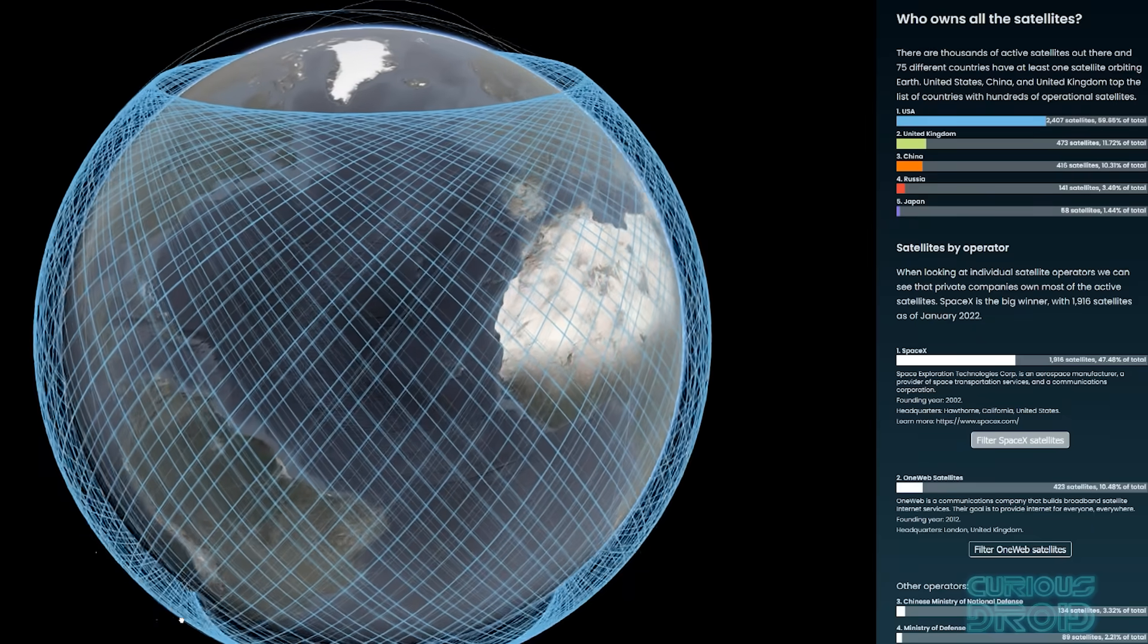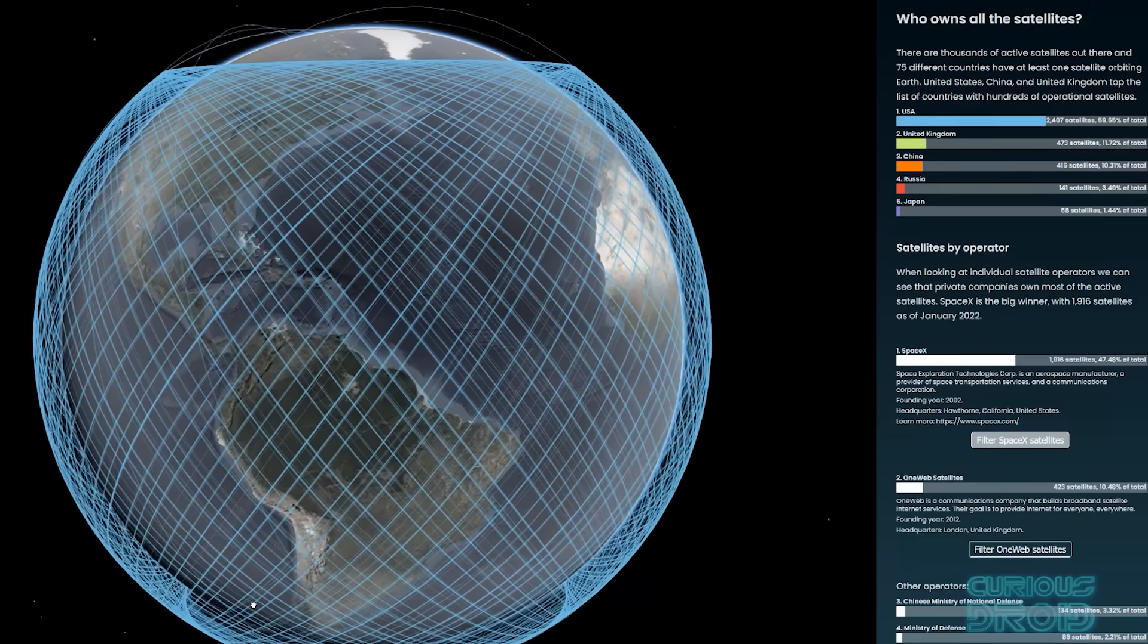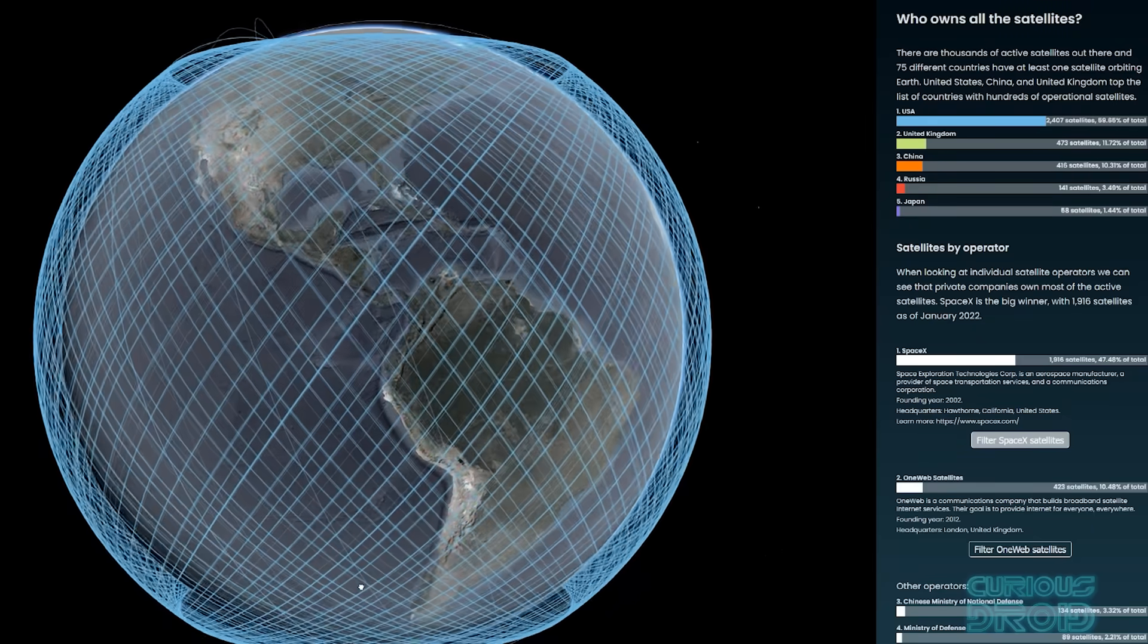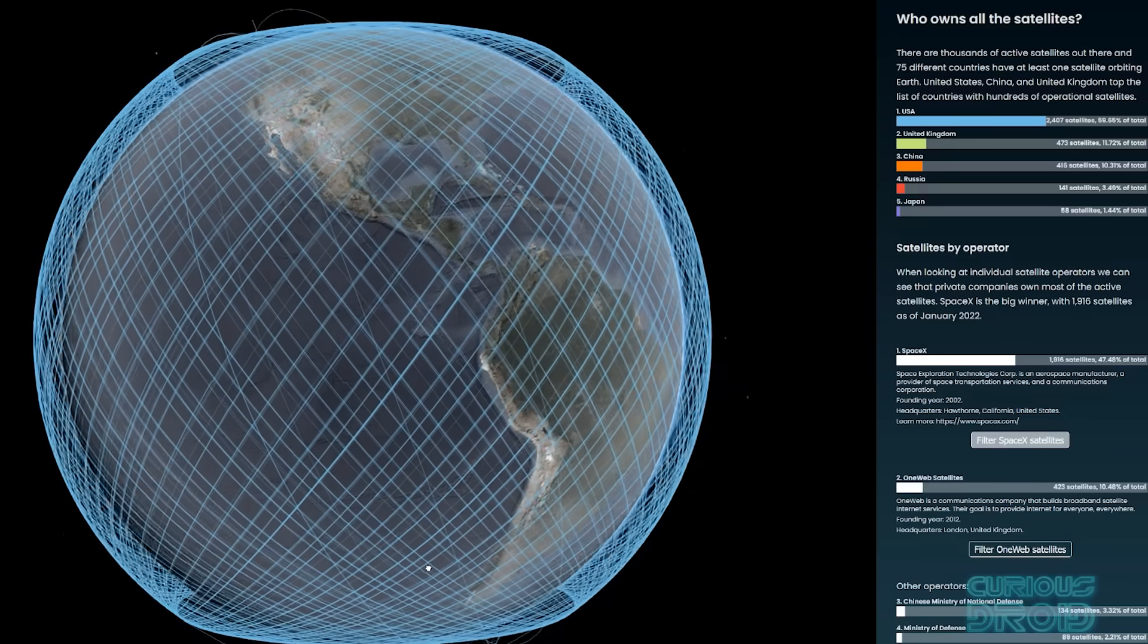But how many satellites can we put into orbit before things start to go wrong, and if it does, can we actually do anything about it?